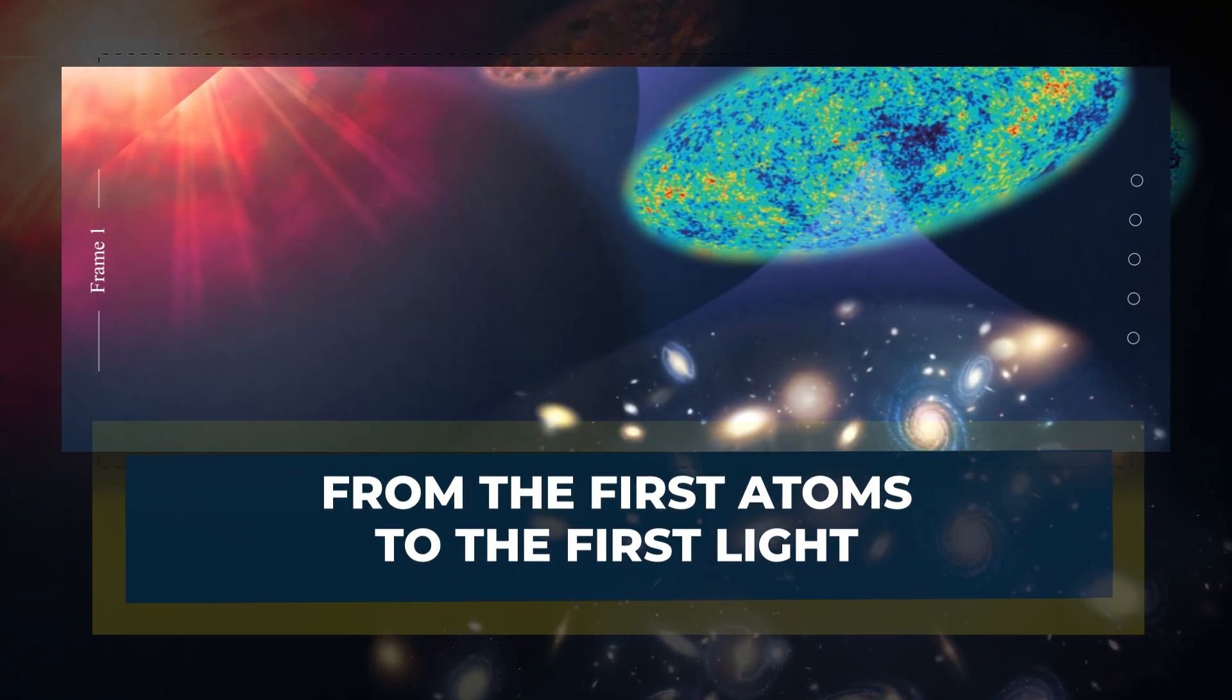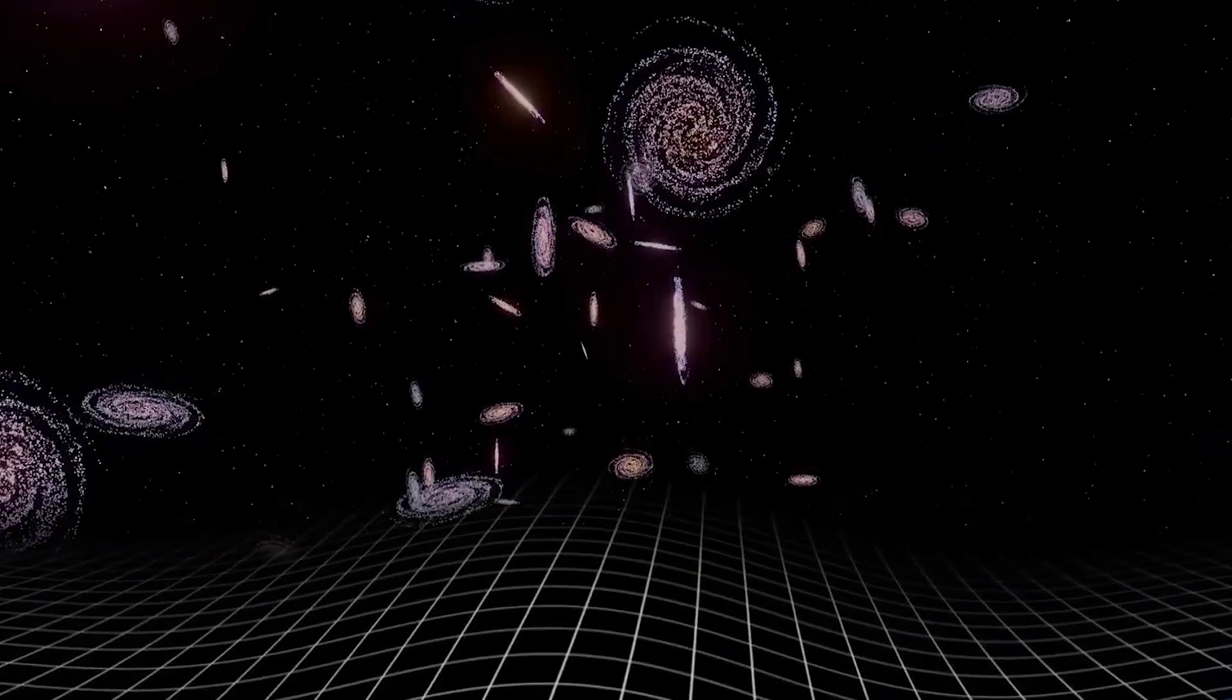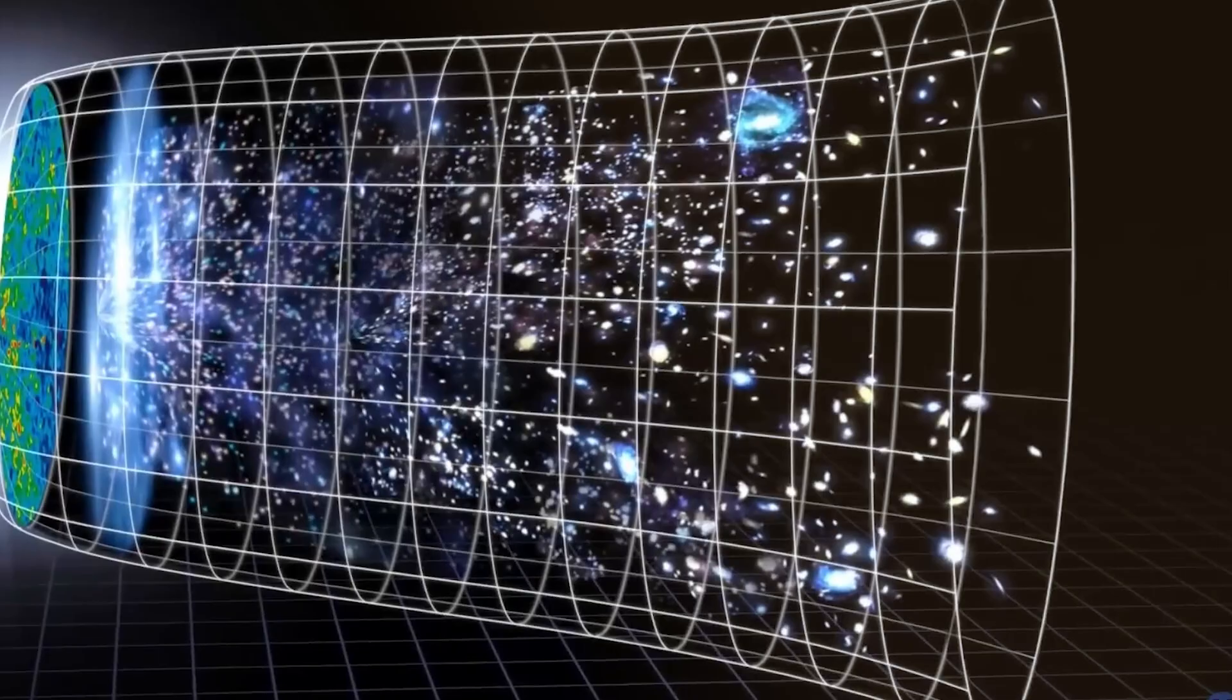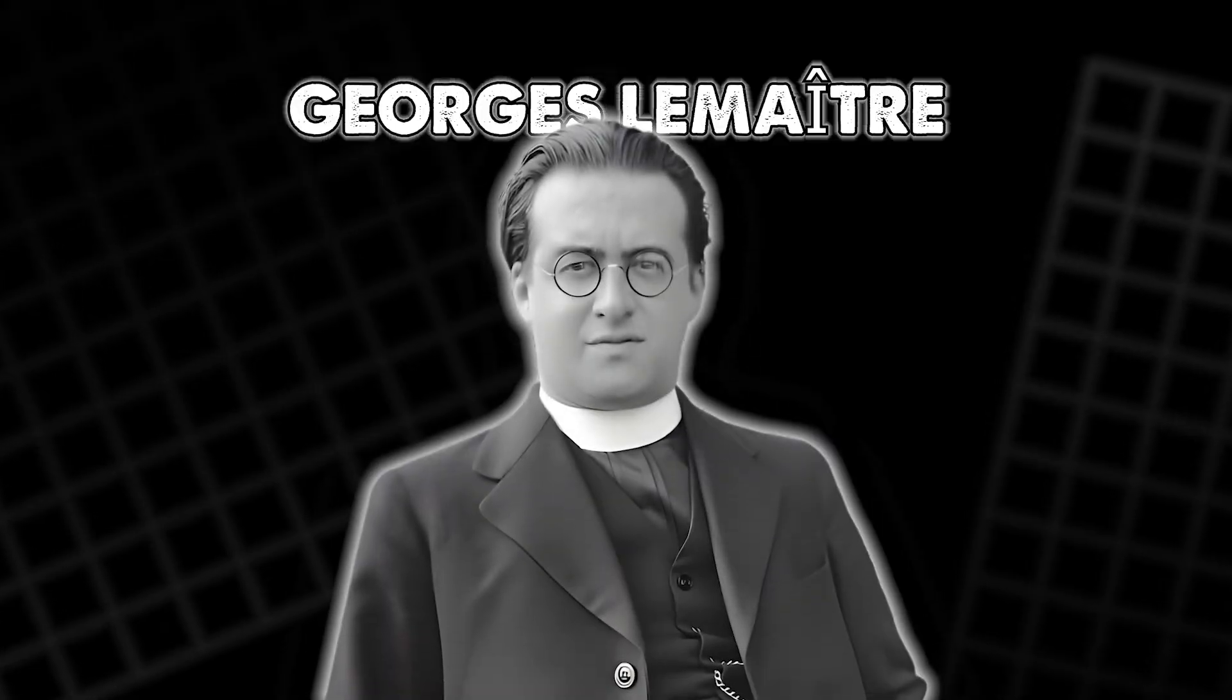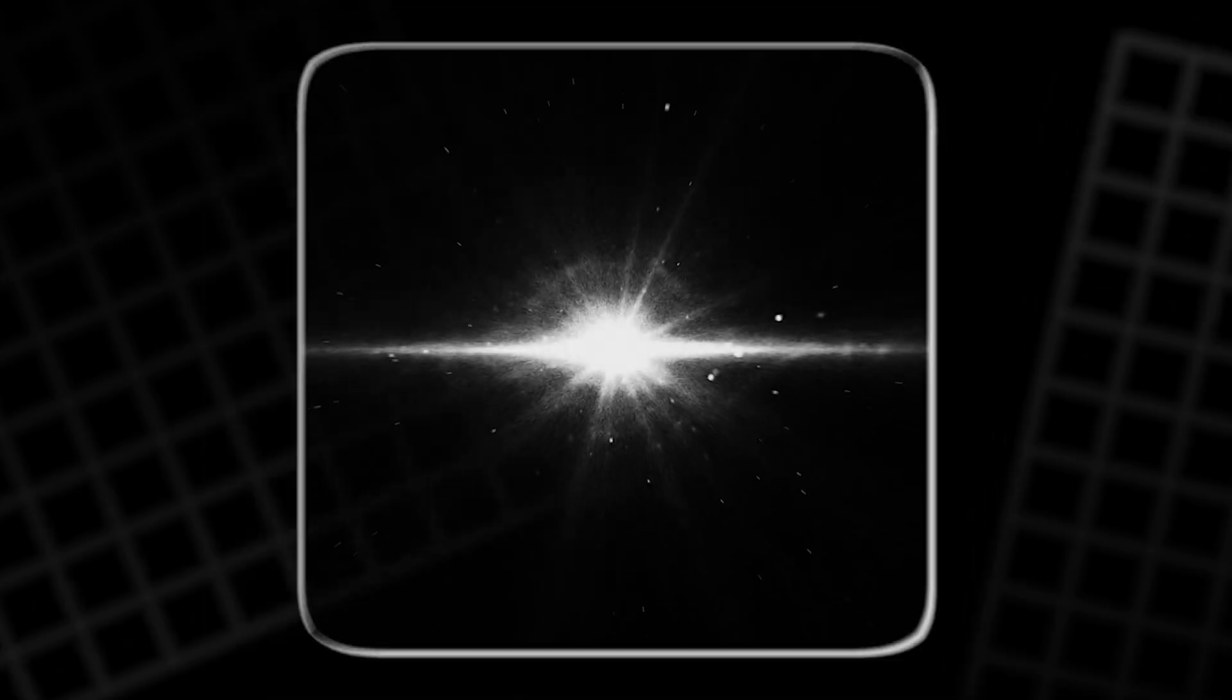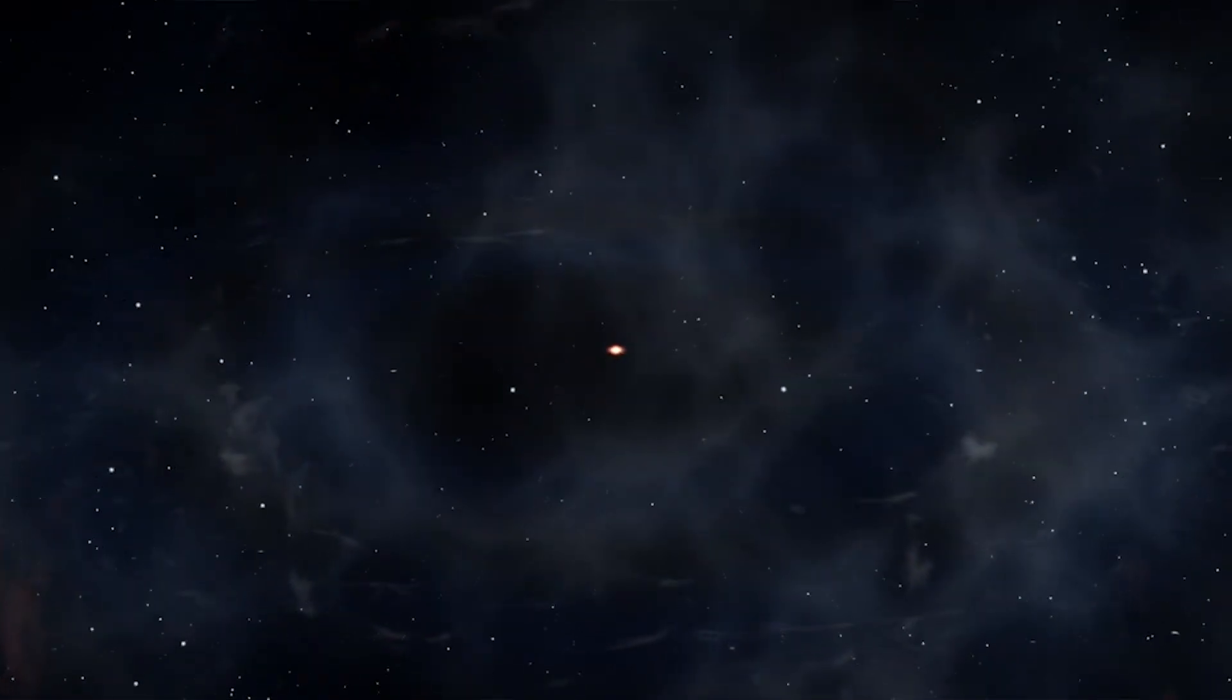From the first atoms to the first light. Once scientists realized the universe was expanding, they asked the obvious question: What happens if we rewind time? Everything once would have been closer, hotter and denser. Georges Lemaitre, a Belgian priest and physicist, called this early state the primeval atom. He described the cosmos as the ashes of a giant fireworks event. And then came a bold idea. This moment was the beginning of space and time itself. A day with no yesterday. This became the classic big bang.